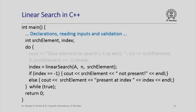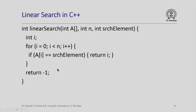If the search element is not minus 1, I call the linear search function, which takes the array a, the number of elements, and the search element, and returns an index — minus 1 if not present, or the index where the element was found. The linear search function iterates through a[0] through a[n-1], and whenever it finds an element equal to the search element, it returns that index. If it exits the for loop without finding a match, it returns minus 1.